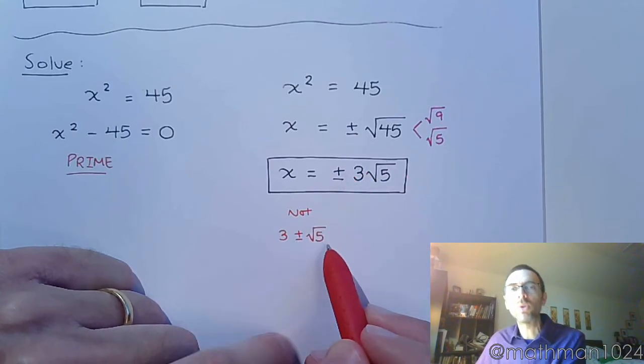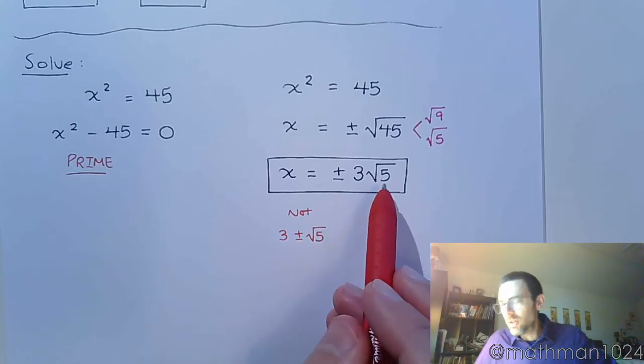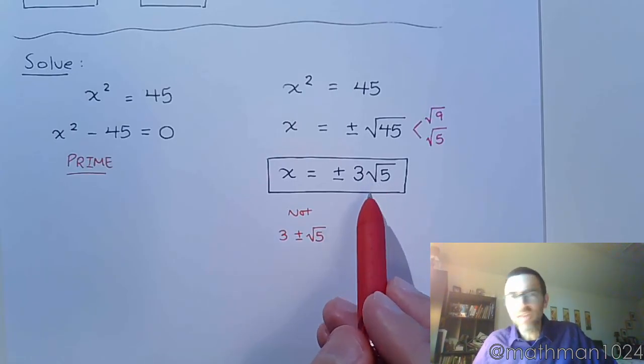However, this plus or minus is only applied to the square root. So you notice that this answer, this irrational answer, is not something that we would have gotten from factoring. So the square root property opens up the doors to help us solve all kinds of quadratic equations that we couldn't have solved before.